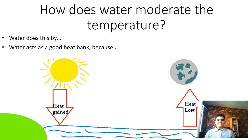Water acts as an effective heat bank because it can absorb and release a relatively large amount of heat with only a slight change in its own temperature. To better understand this capacity of water, we have to learn about temperature and heat.